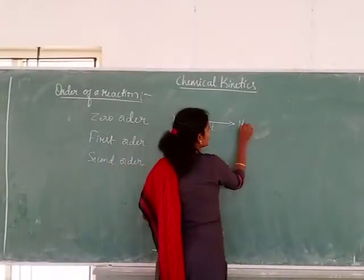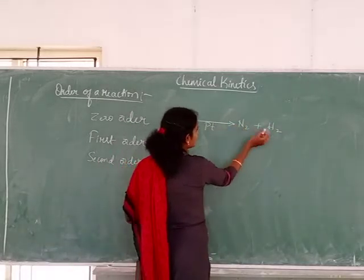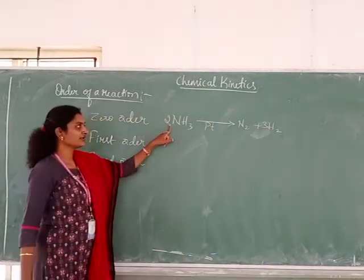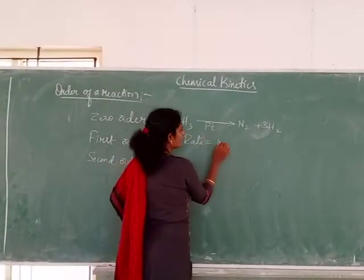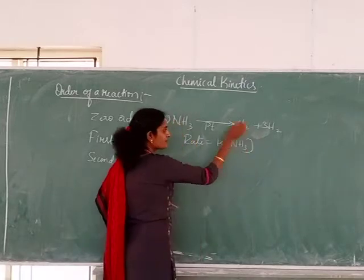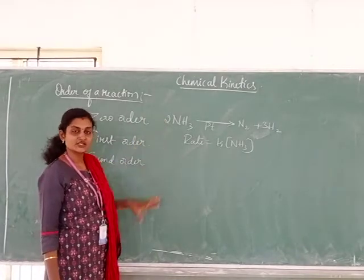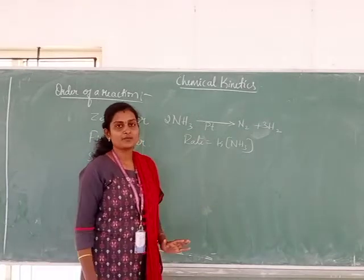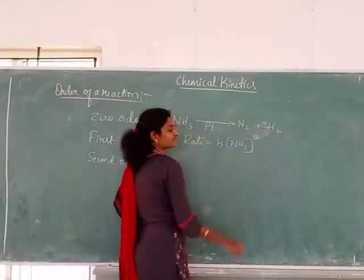When ammonia decomposes, what we will get is nitrogen and hydrogen. If you want to write the rate expression for this reaction, it would be rate is equal to K, the rate constant, into molar concentration of the reactant to a certain power. In this reaction, this is a special case where whatever number of moles we take does not affect the rate — the rate depends on the catalyst surface. So that is why we write the power as zero.